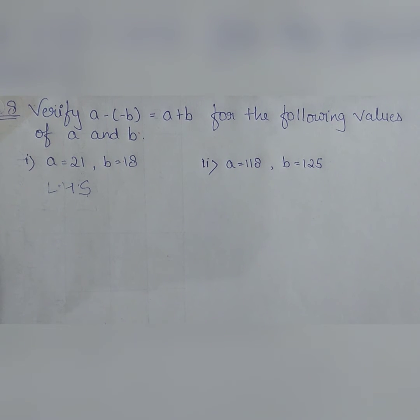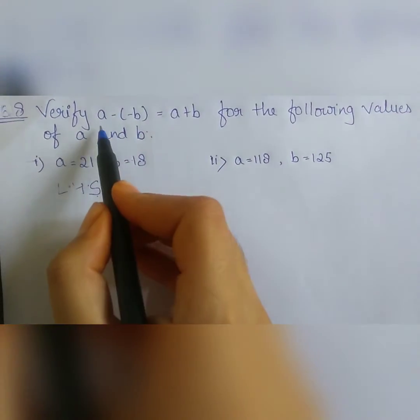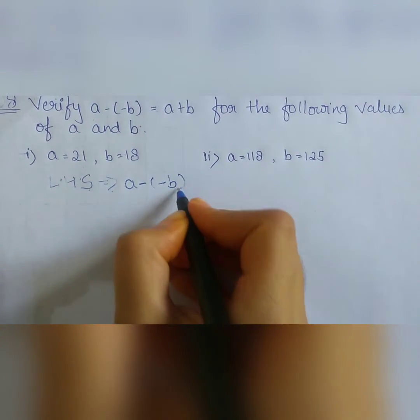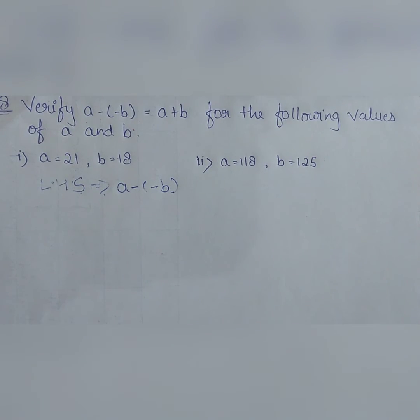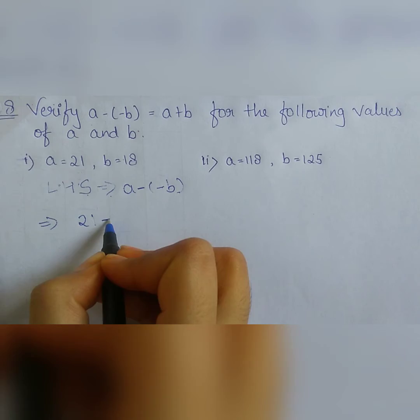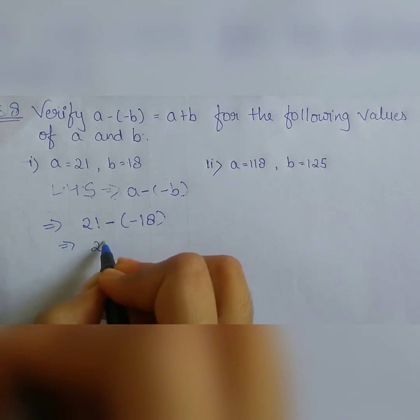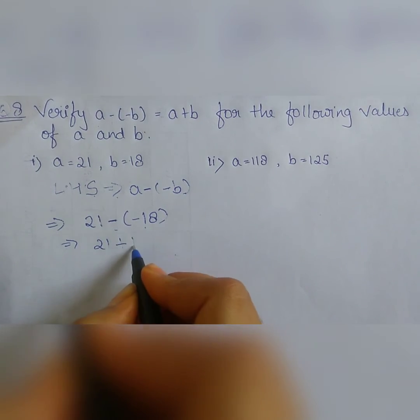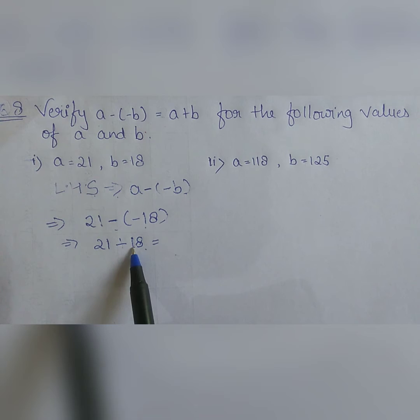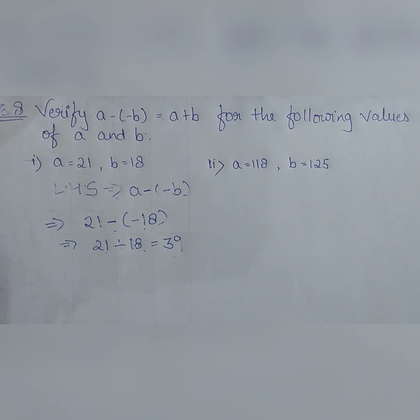First of all, we will take left hand side, LHS. So here left hand side is a minus minus b. We will put the values of a and b. So here a is 21, 21 minus b is 18. Now 21 minus minus becomes plus 18. Now 21 plus 18, 20 plus 10 is 30, 38 plus 1 is 39. So here the LHS we are getting is 39.